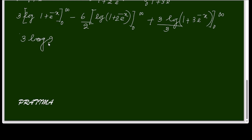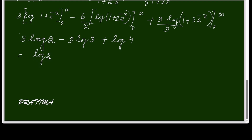This gives 3 log 2 minus 3 log 3 plus log 4. Simplifying: log(2³) + log(4) - log(3³) = log(2³ × 4) / log(3³) = log(32/27). So the answer is log(32/27).